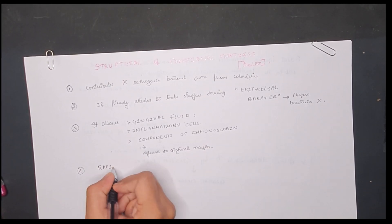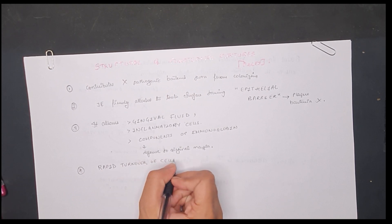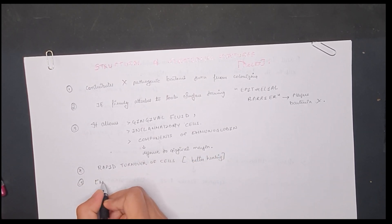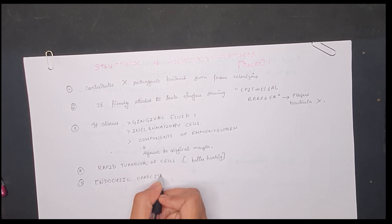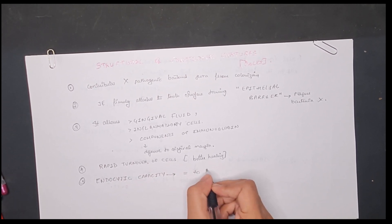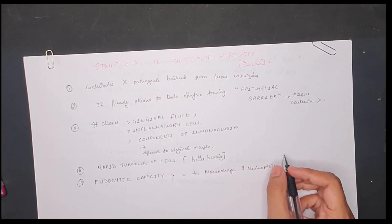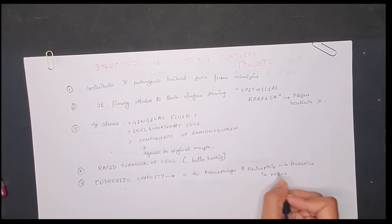Also, it exhibits a rapid turnover. Rapid turnover is important because it helps in better healing in case of any injury. Also, they have some endocytic capacity equal to macrophages and neutrophils, and these activities might be protective in nature.